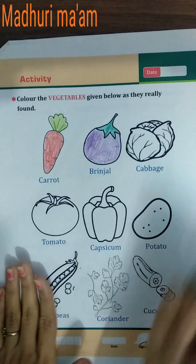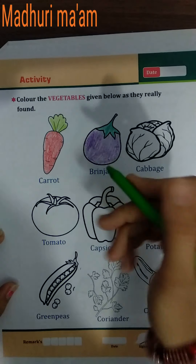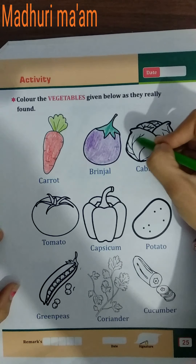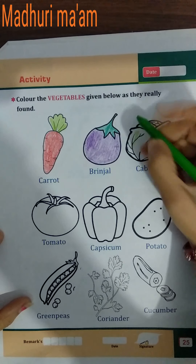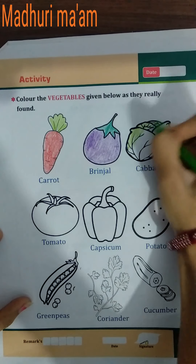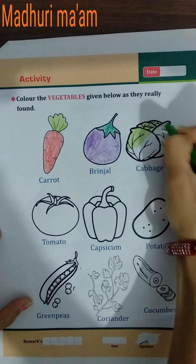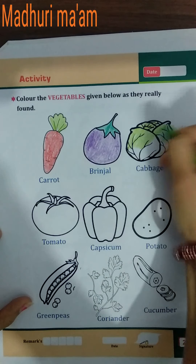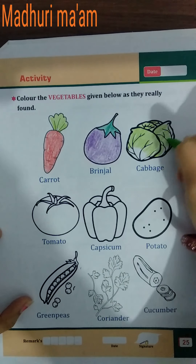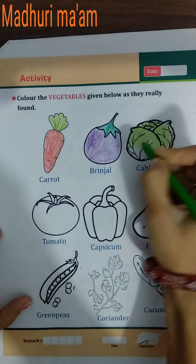Then, cabbage. What is the color of cabbage? Green color. So do green color in the cabbage picture, like this.